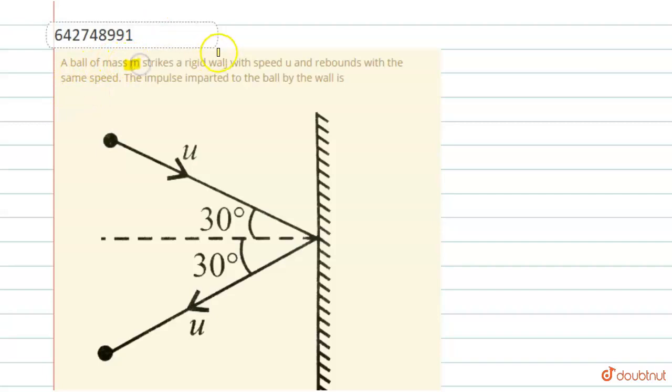A ball of mass m strikes a rigid wall with speed u and rebounds with the same speed. The impulse imparted to the ball by the wall is... In this question we have to find the impulse, and we have mass and speed u.